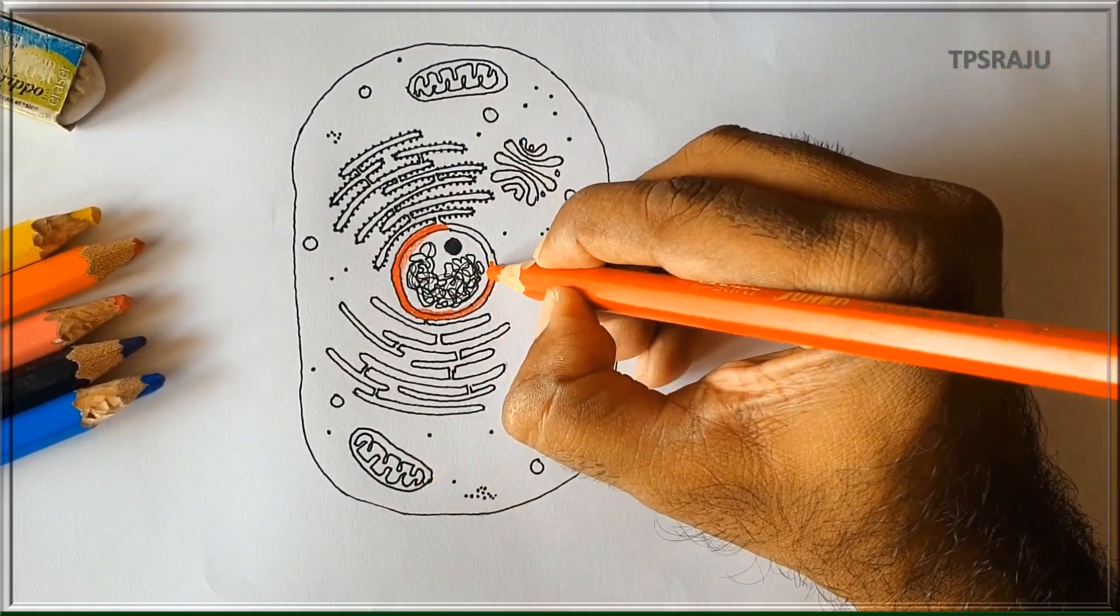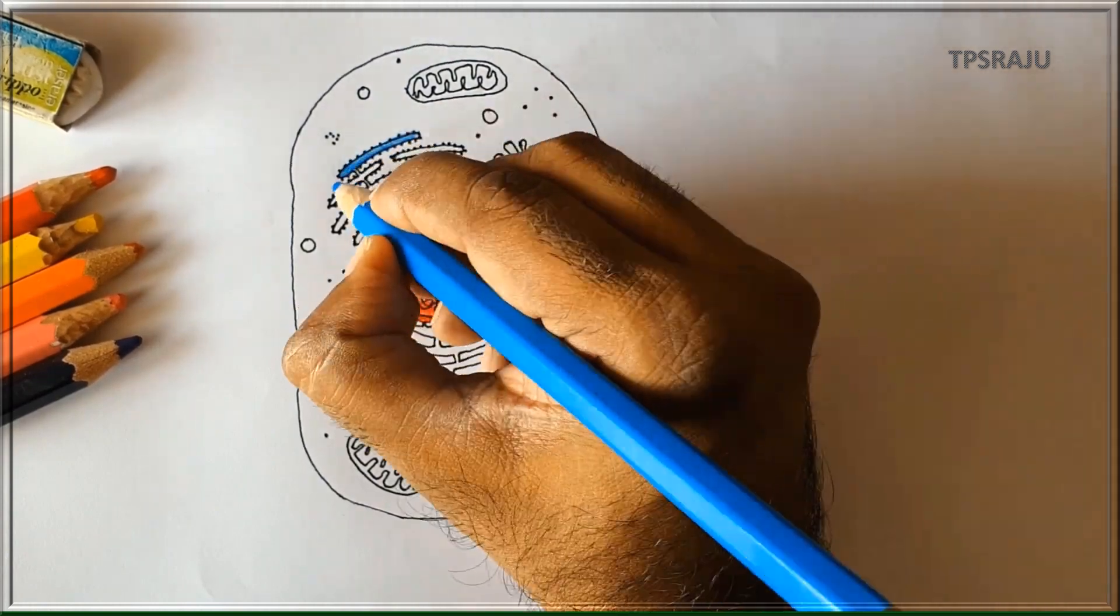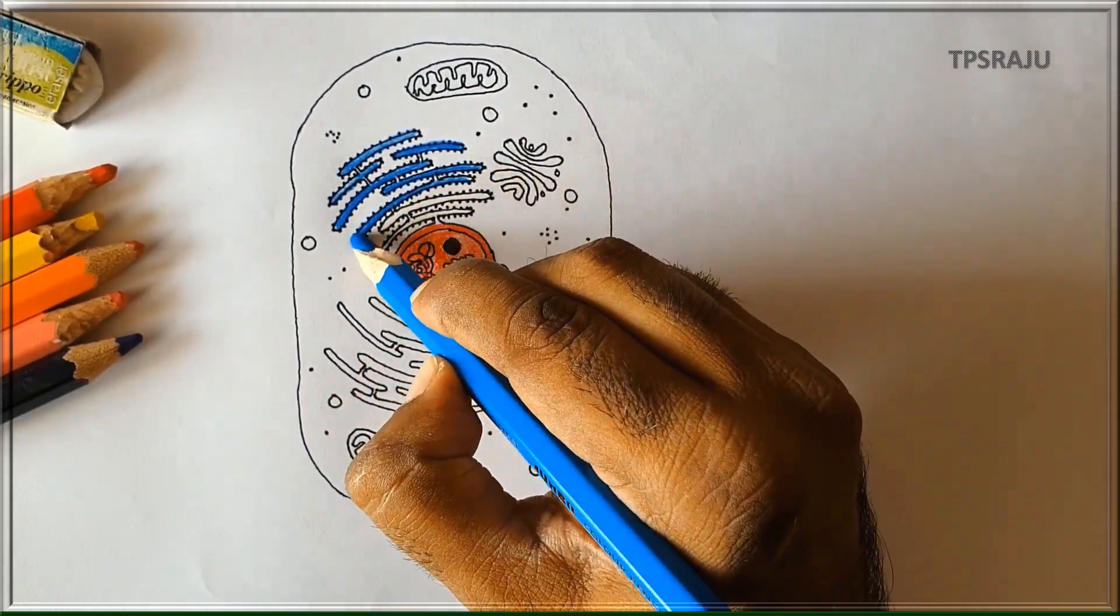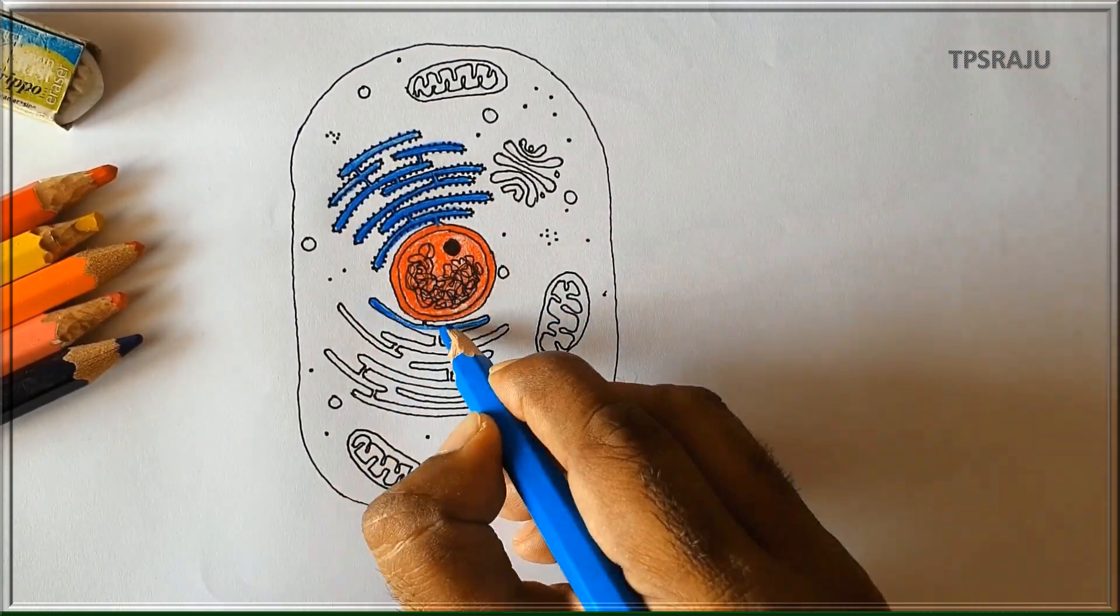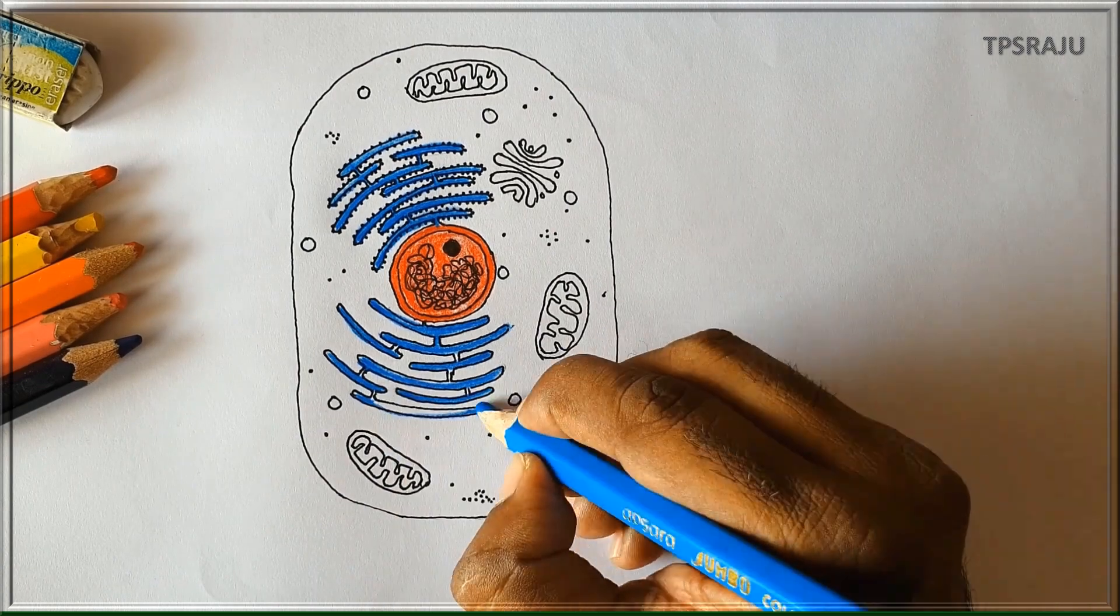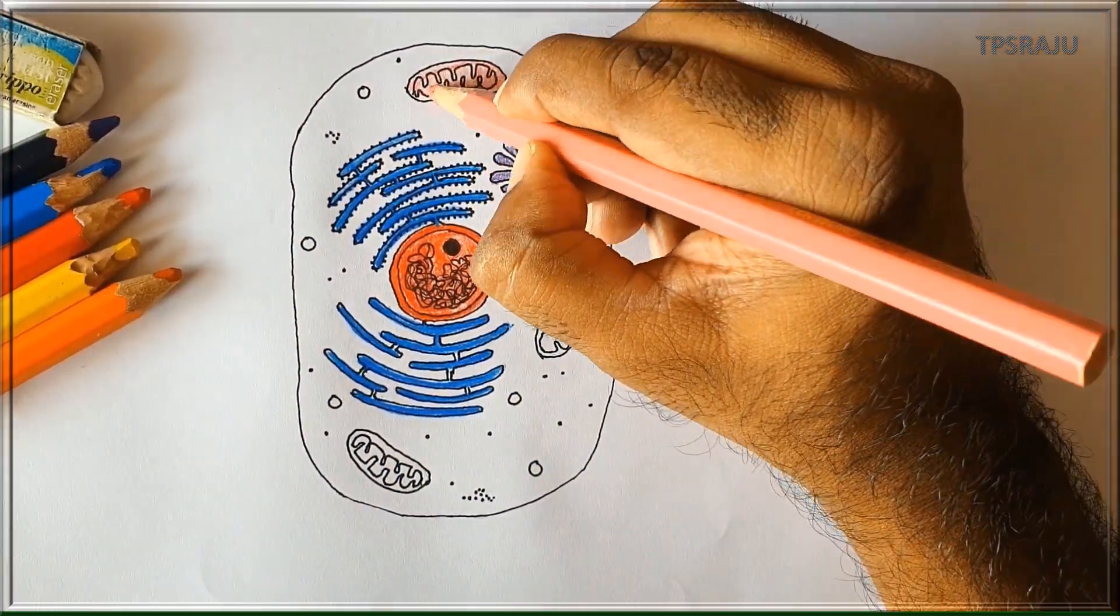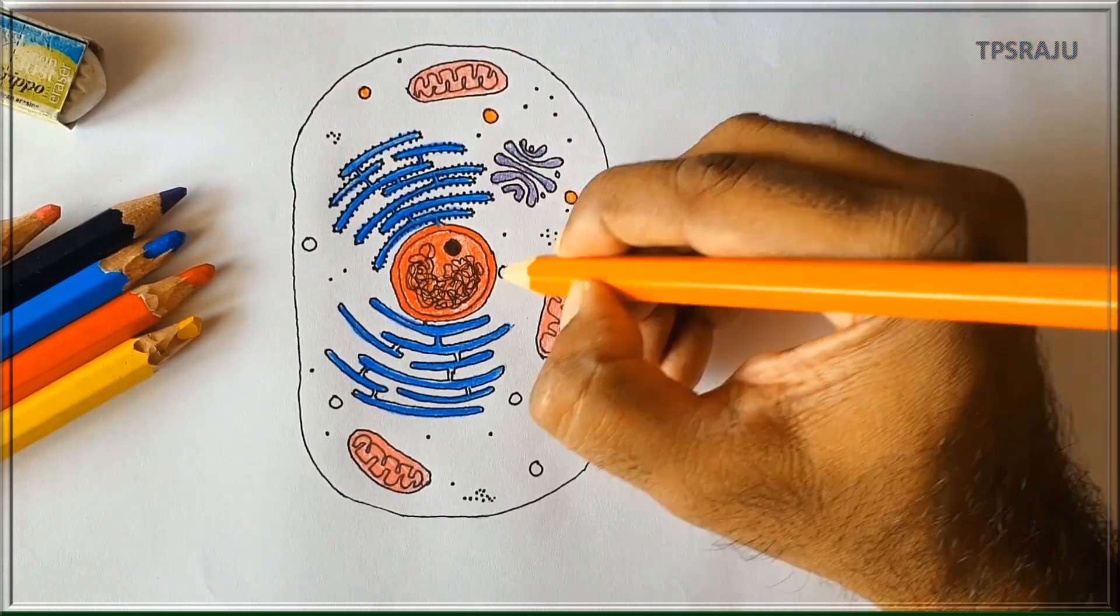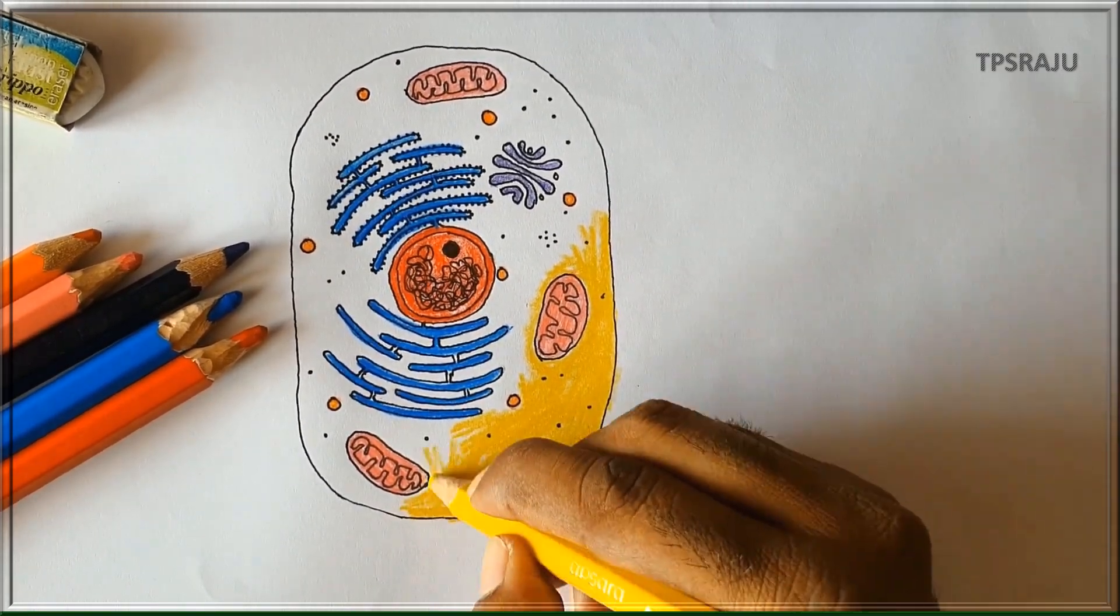We are applying red color to nucleus. Applying blue color to rough endoplasmic reticulum. This is smooth endoplasmic reticulum. Violet color to Golgi complex. Pink color to mitochondria. Orange color to lysosomes. Applying yellow color to cytoplasm.